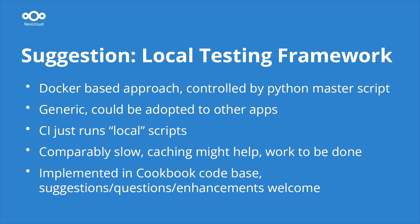This local testing framework I created — I can't show you everything because it's way too much — is Docker-based. It's rather generic at the moment, focused on the cookbook app because that's where it's integrated, but it can be extended to arbitrary apps without a problem. Continuous integration is just running the same scripts I would normally use for local testing — that's more or less all.